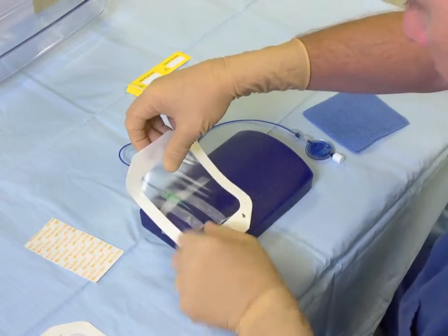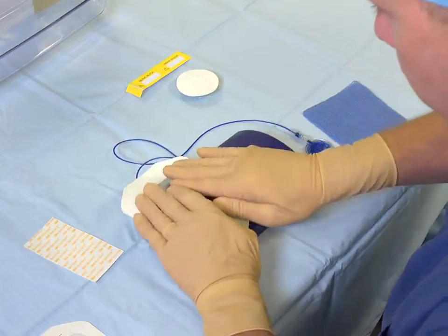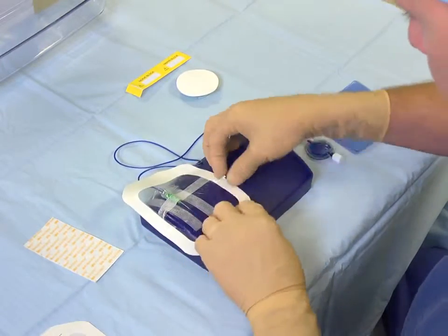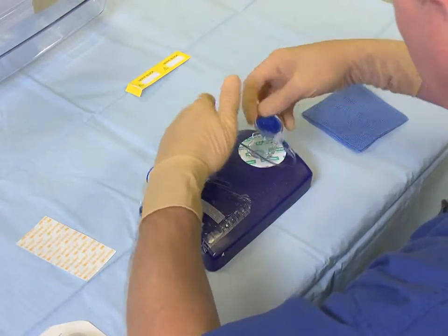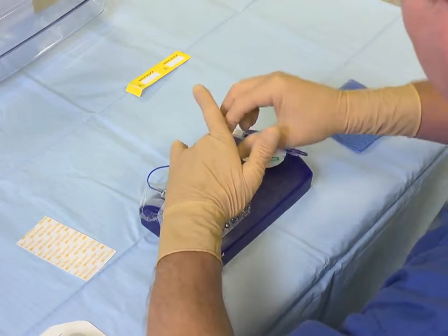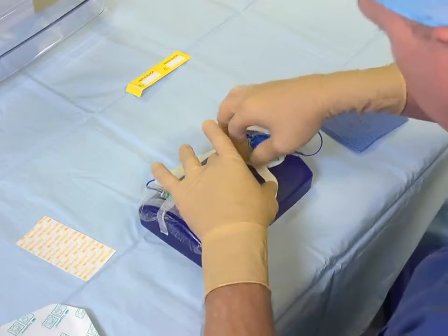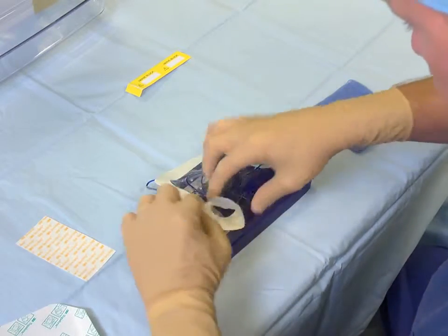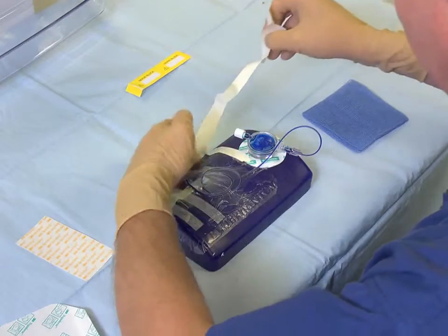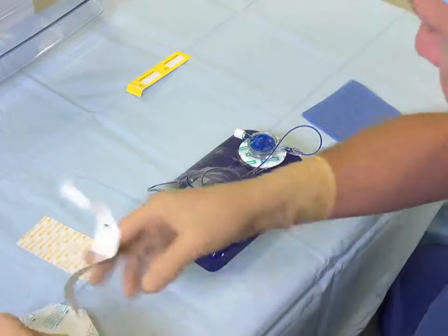A conventional Tegaderm dressing over the top, ensuring that the entry point is visible. Use the fix-along system to fix the filter into place. My preferred method is to put a secondary Tegaderm over the coil of the infusion line.